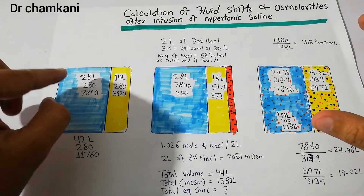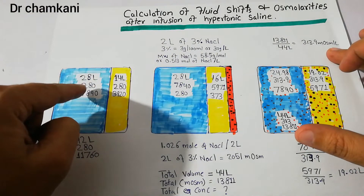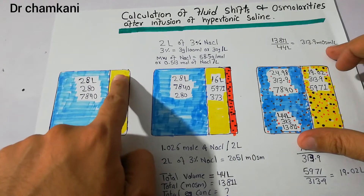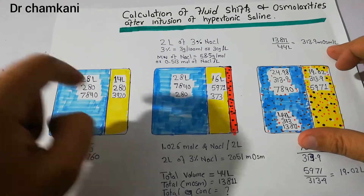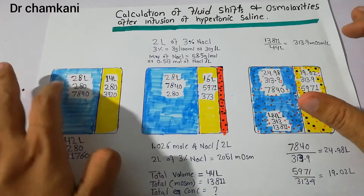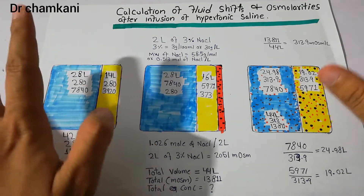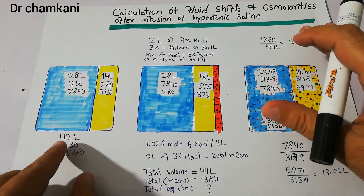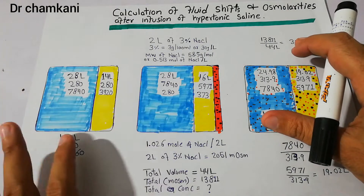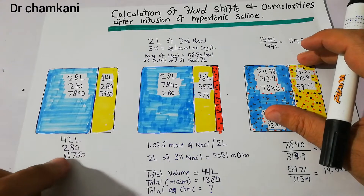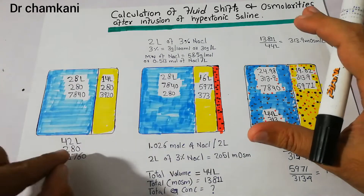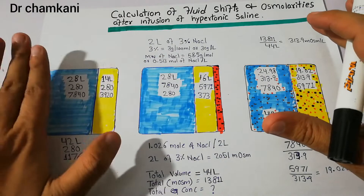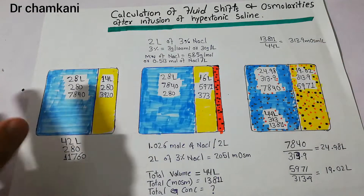To revise: in the normal human body, the intracellular fluid compartment has 28 liters, osmolarity 280, and 7840 total milliosmoles. The extracellular fluid compartment — plasma plus interstitial fluid — has 14 liters, osmolarity 280, and 3920 milliosmoles. Combined, the body has 42 liters of fluid, osmolarity 280 milliosmoles per liter, and 11,760 total milliosmoles.